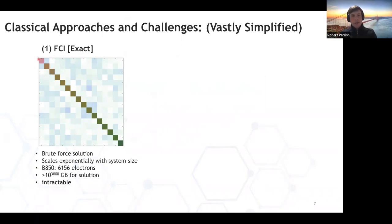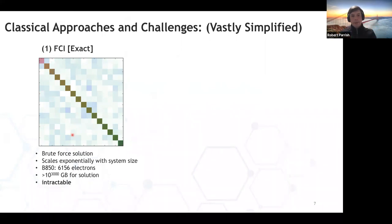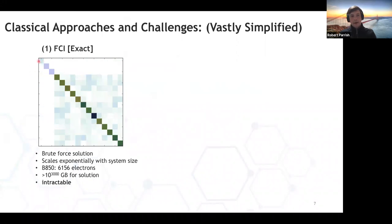Conceptually, we are given the Hamiltonian matrix — this big table of numbers schematically represented here. It's a polynomial amount of information about the interactions between the electrons that goes into it. But it's an enormous matrix — it scales exponentially in row and column dimension with the number of electrons or atoms in the system. Our job is to take this matrix and partially diagonalize it to find the ground state energy, maybe a few excited states, and other properties of the molecule. It's just a big matrix diagonalization problem, but very difficult because of the exponential size.